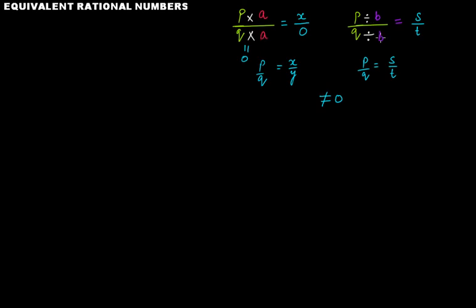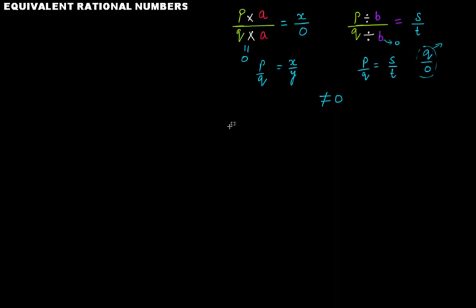Similarly, if you divide q by zero — that is, if b is zero — then q divided by zero is undefined. You will learn more about why this is undefined at a higher level. So the rule is: multiply or divide by any number other than zero. That is the way to find equivalent rational numbers. Let's take some examples.